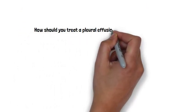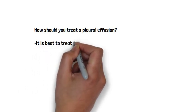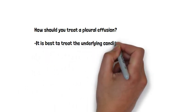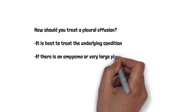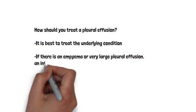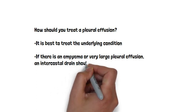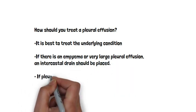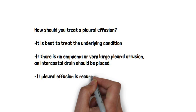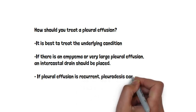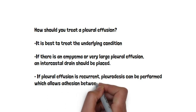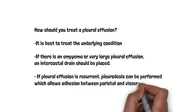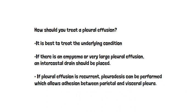And finally, how would you treat a pleural effusion? So basically, it's best to treat the underlying condition. For example, in heart failure, you may give diuretics. And if there is an empyema or very large pleural effusion, you should insert an intercostal drain. And if pleural effusions are recurrent, you can do pleurodesis, which allows adhesion between the parietal and visceral pleura.